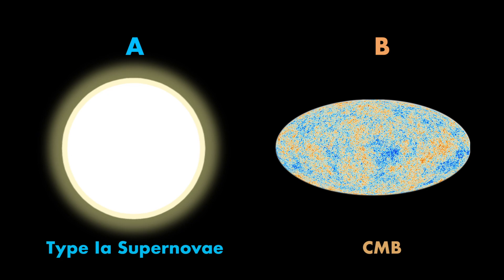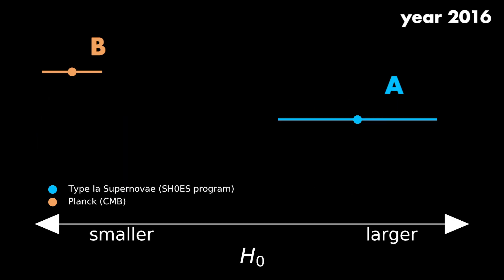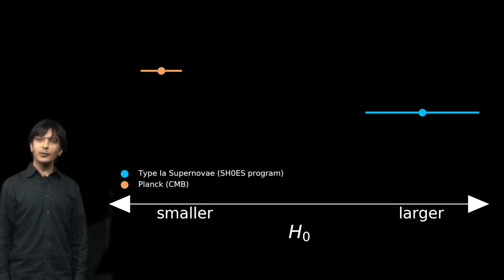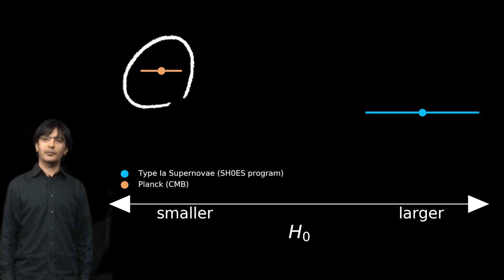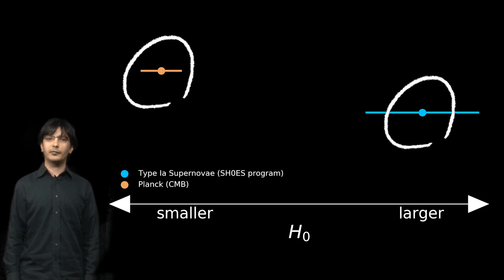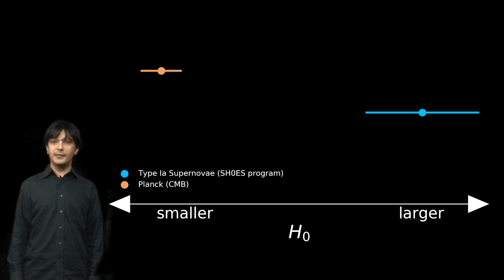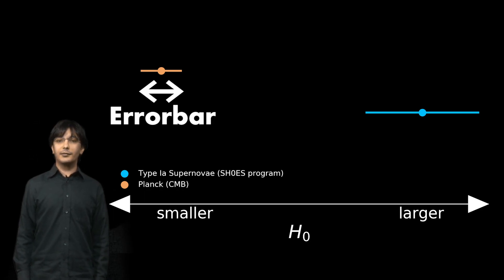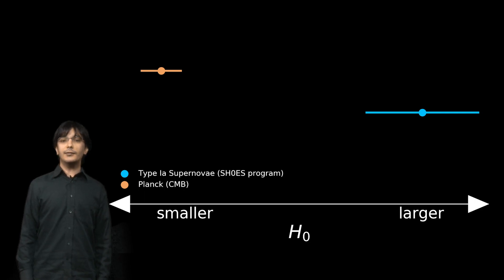But a problem has come about in recent years as the measurements have become more precise — these two methods don't agree with each other. The value of H0 calculated by Planck's observations of the CMB is smaller than the value calculated from the supernova observations by about 10%, and we don't know why this is. The error bars around each measurement represent the likely range of the measurements, and as you can see, the distance between these measurements is larger than can be explained by their uncertainties.